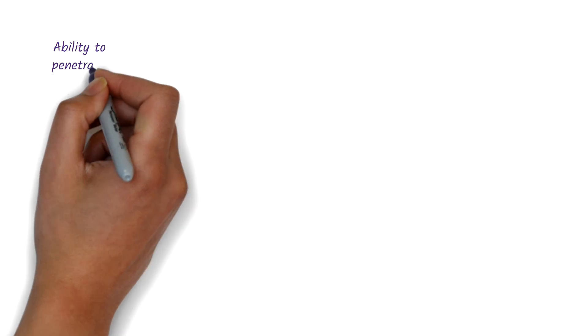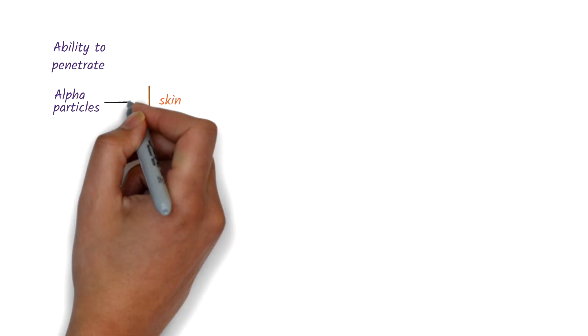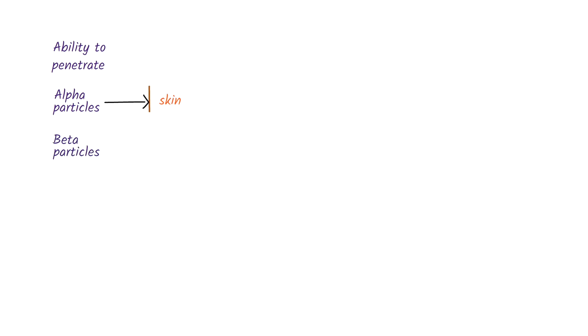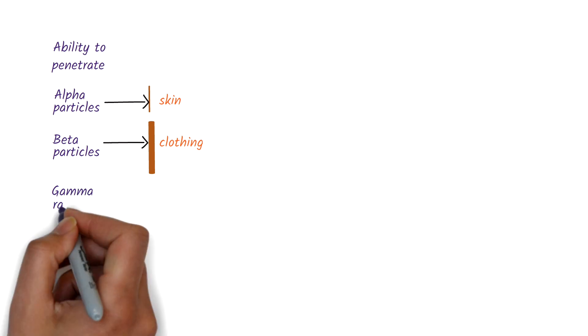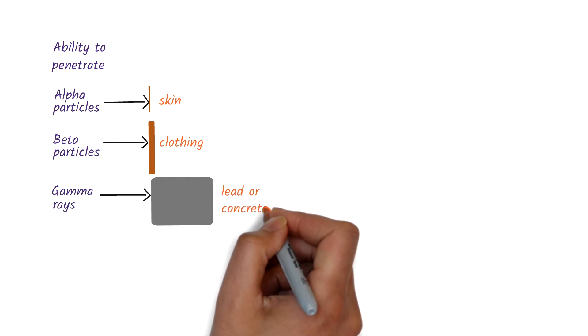Another characteristic of ionizing radiation is how deeply it can penetrate materials. For example, alpha particles can be stopped by something as thin as the skin. Beta particles can be stopped by a layer of clothing. And gamma rays are highly penetrating and require dense shielding, like lead or thick concrete.